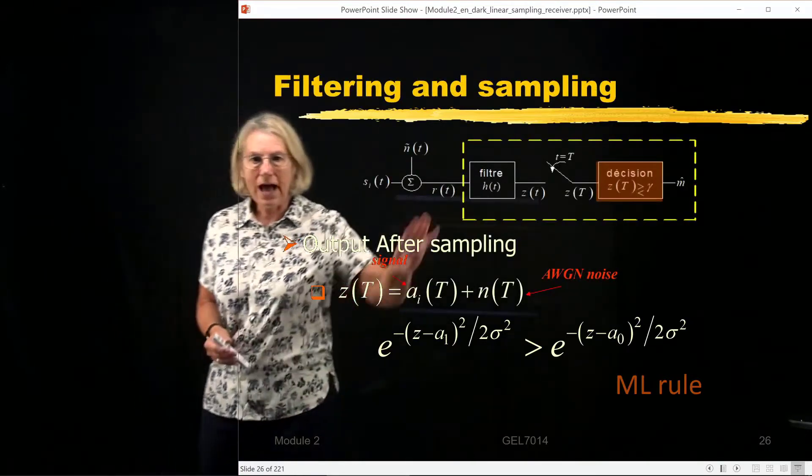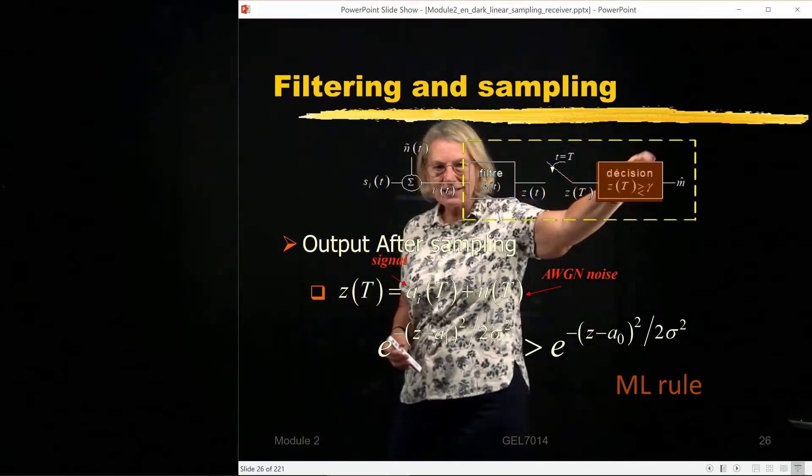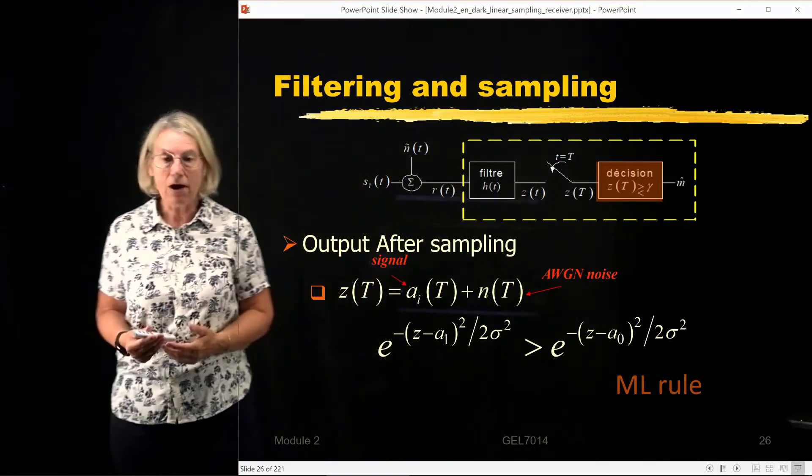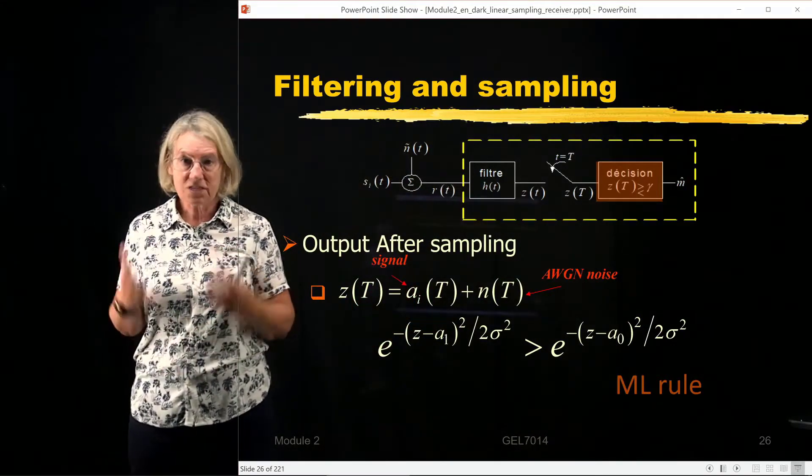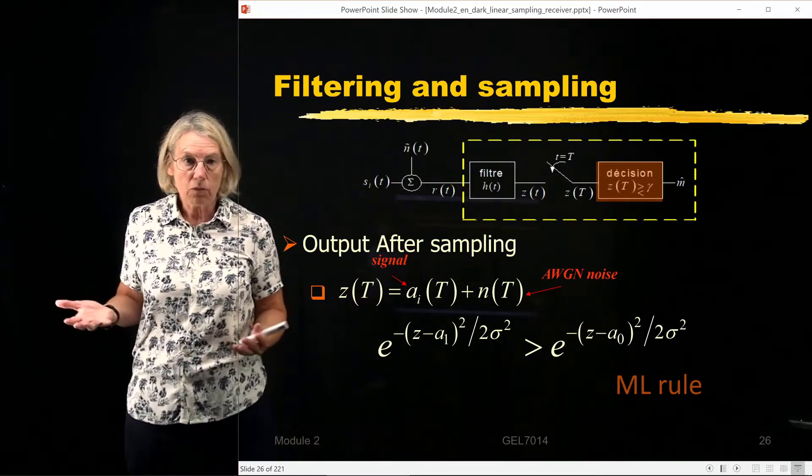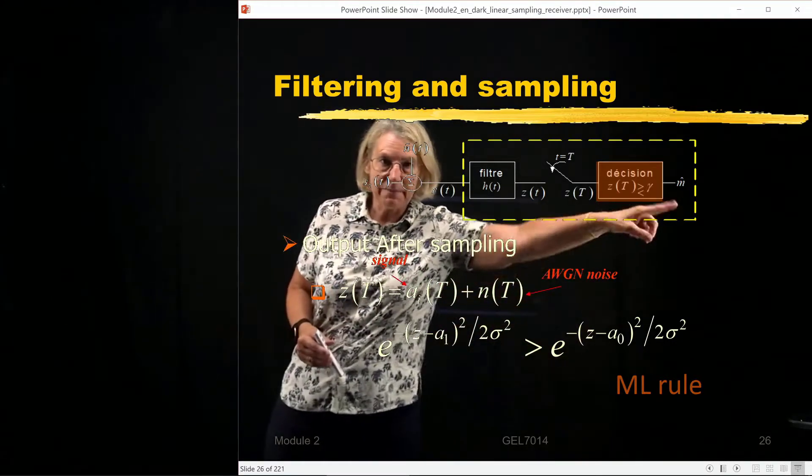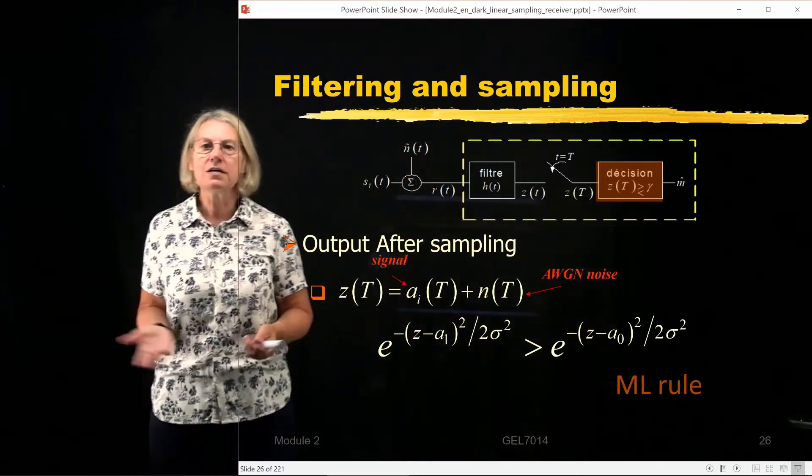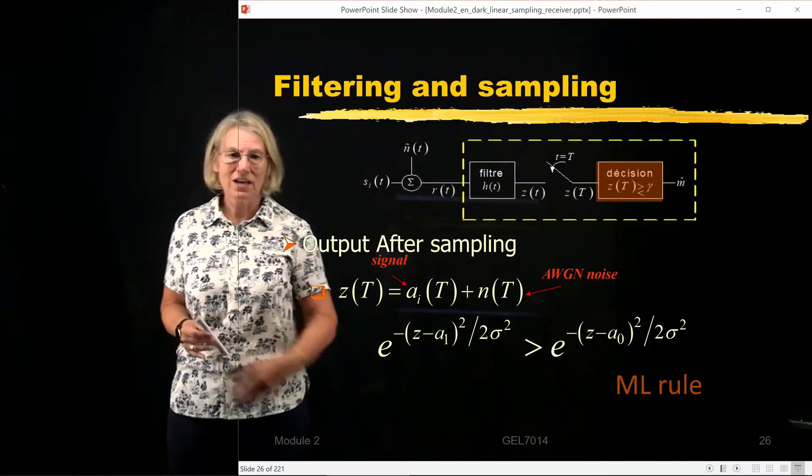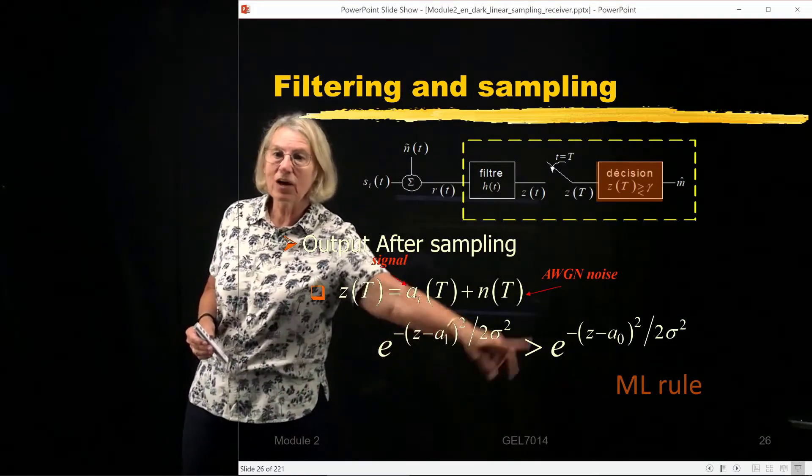So now we're looking here in this box, in the decision box, I'm supposed to be comparing the decision statistic with a number, with gamma. Z of t compared with gamma. So what is gamma? So now it's just a question of simplifying this inequality.